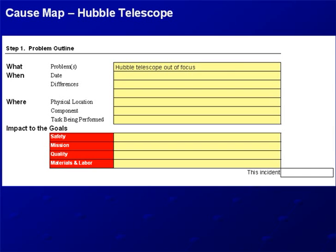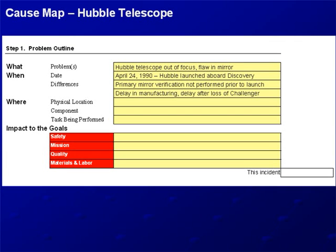Some people say the telescope is out of focus, and some people say there's a flaw in the mirror. This happened back in 1990. What was different when this happened was we didn't verify the mirror before we put it in space, and there were delays related to manufacturing and also during the loss of the Challenger. The error happened during manufacturing, but they found it during orbit testing.